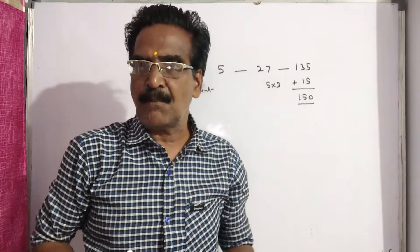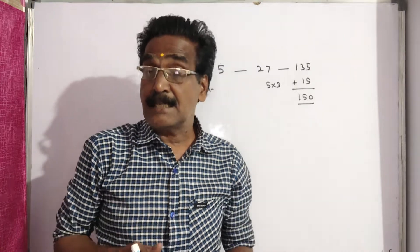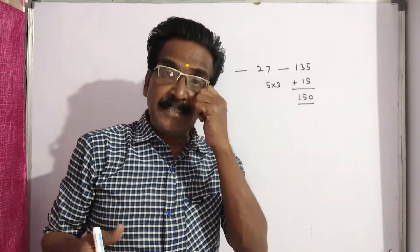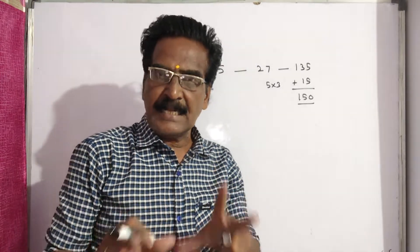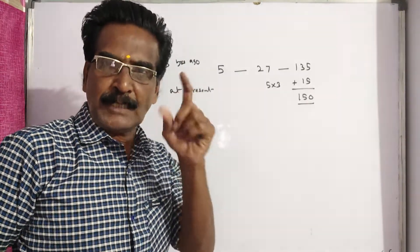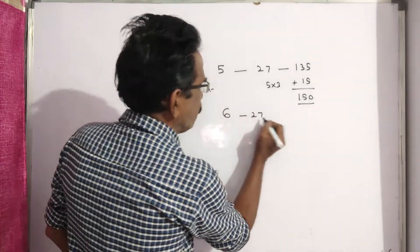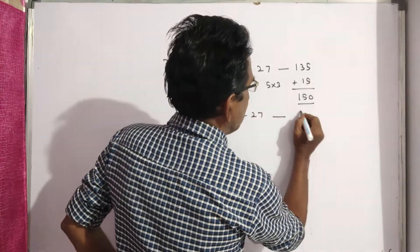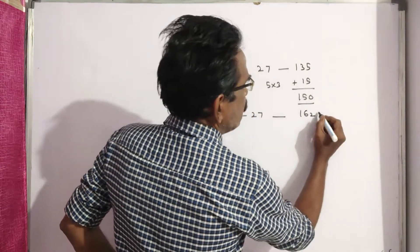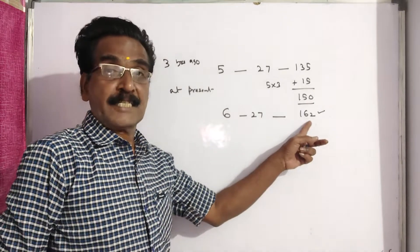Meanwhile, a child was born, and with the child's birth, the average of the family is still 27. So now the total members of the family will become 6, and the average is 27. Six times 27 is 162. So this is the total age of all six members.